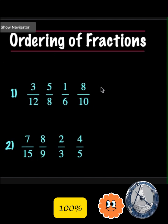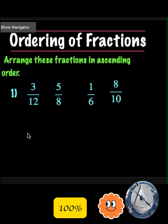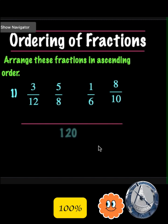In this one, we have different numerators and different denominators. When there are different numerators and different denominators, we use the LCM method to order the fractions. To arrange this fraction in ascending order, we find the LCM of 12, 8, 6, and 10, which is 120.